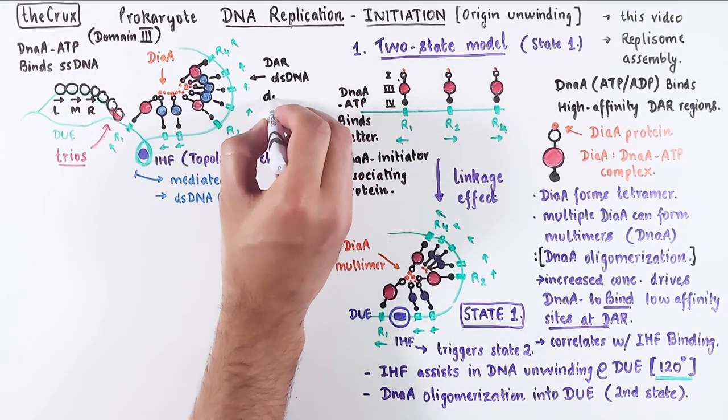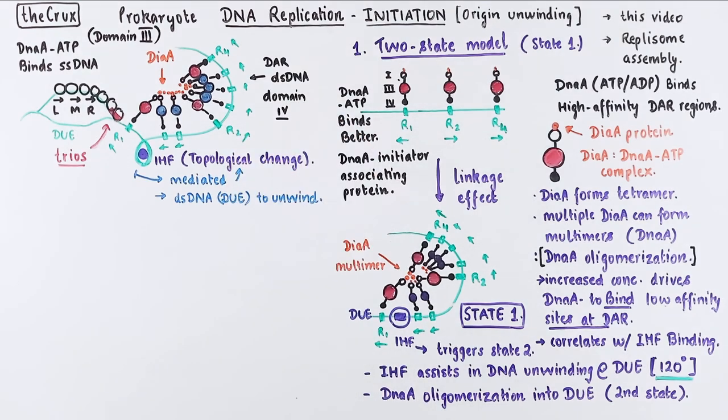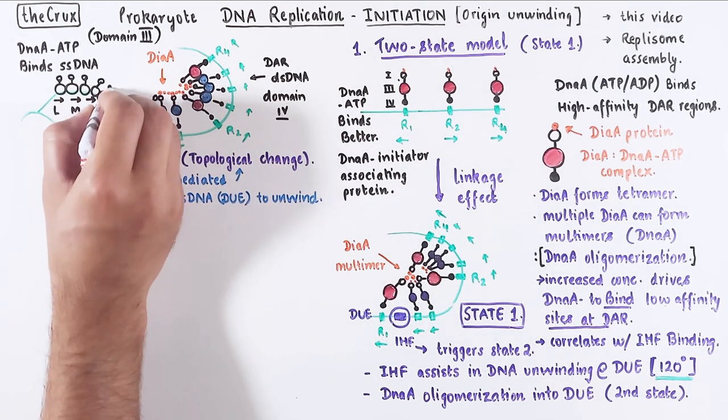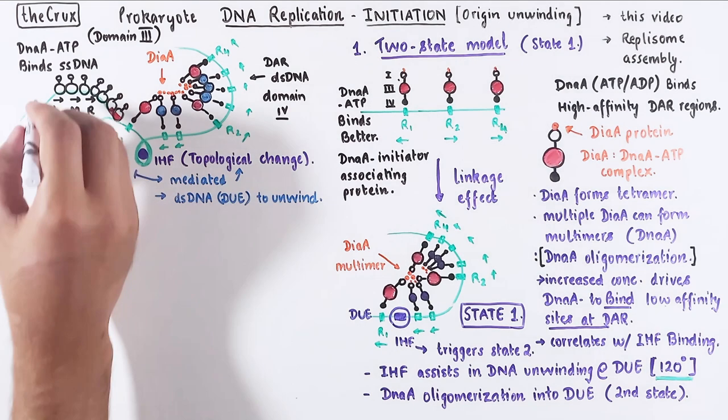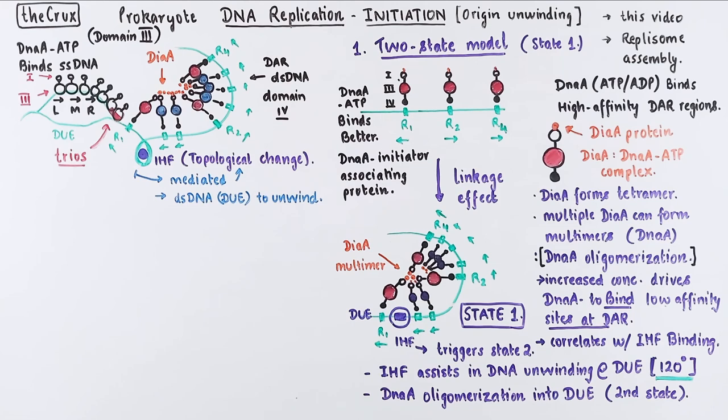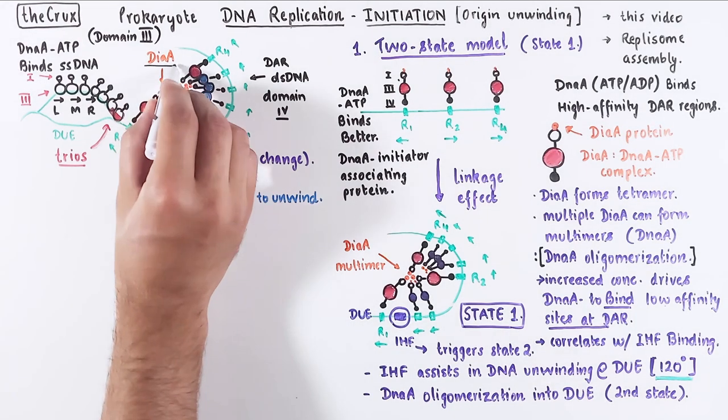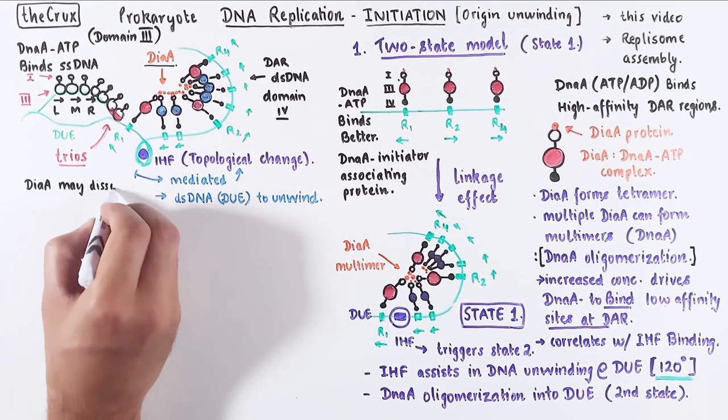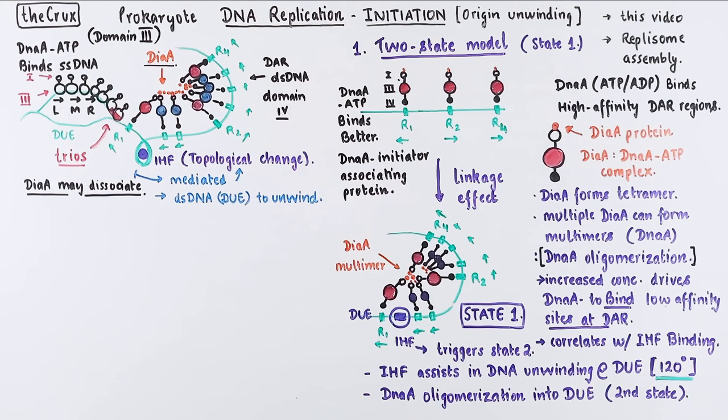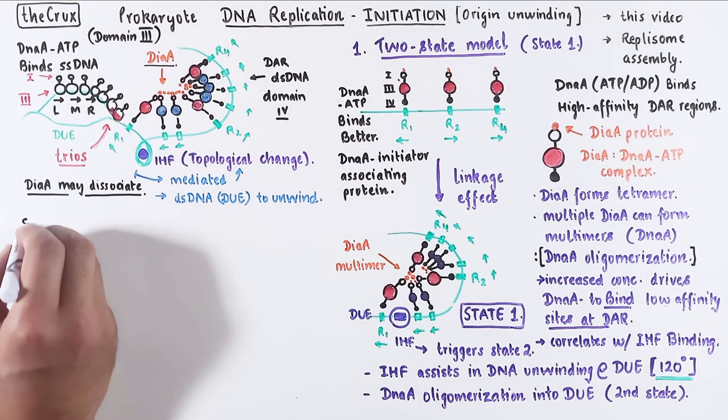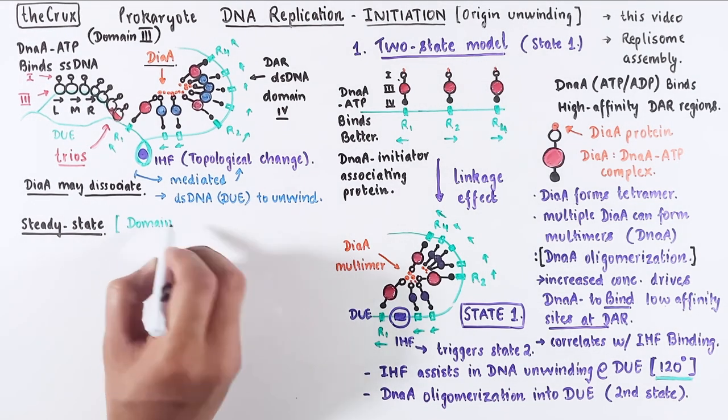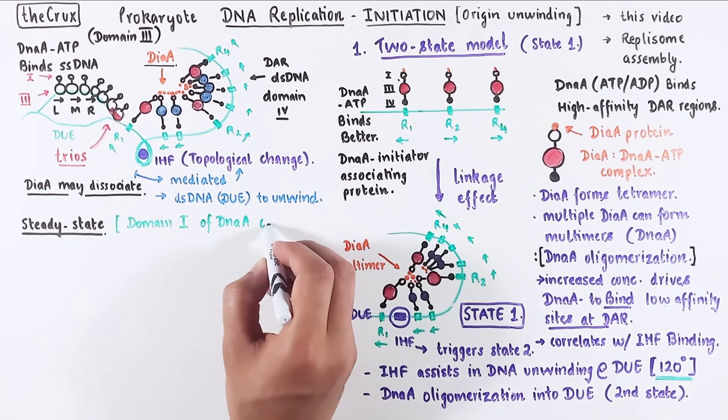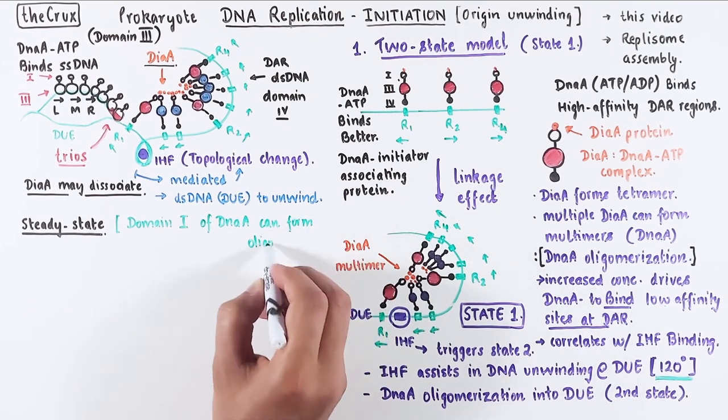In contrast, remember that DAR regions are bound by domain 4. So in this picture of single-stranded DNA binding at state 2, I am not showing domain 4 for simplicity. Now as this occurs, DiaA may dissociate away from the complex. We will discuss this exact mechanism of DiaA dissociation in the next video. Anyways, this dissociation of DiaA enables a steady-state transformation, which is in a forward equilibrium to move into the replosome assembly step.